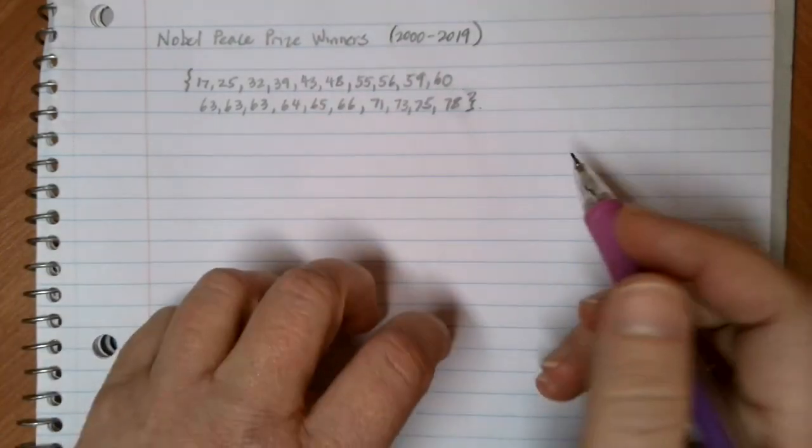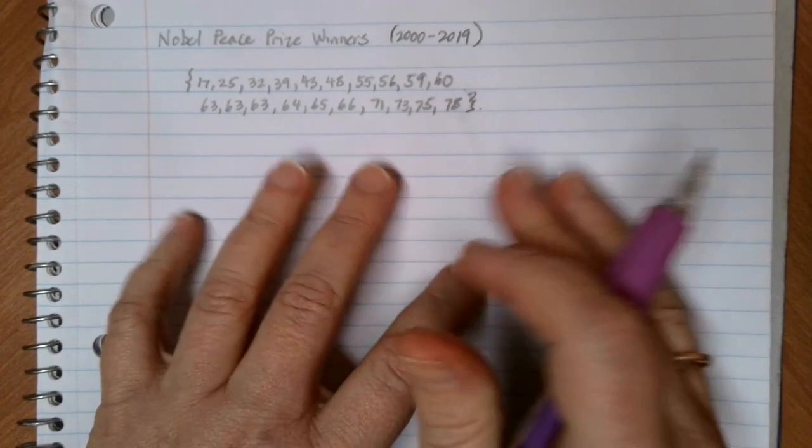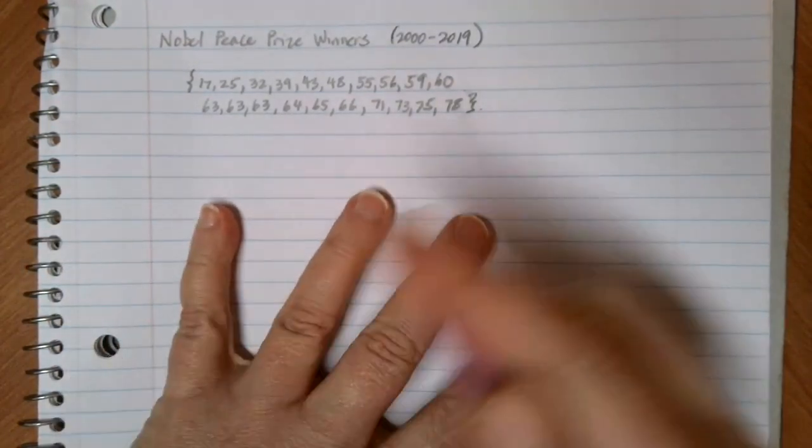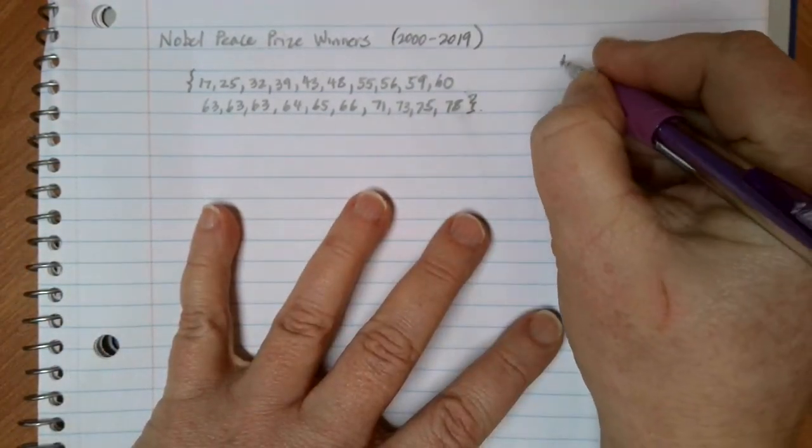Another common way to summarize visually a data set, besides the histogram that we talked about in the last video, is something called a box plot.